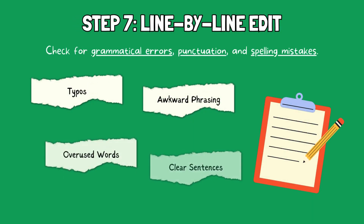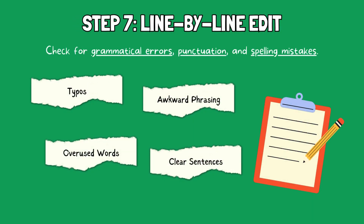Step 7: Line-by-line edit. Polish your prose. This is the stage to check for grammatical errors, punctuation, and spelling mistakes. Look for typos, grammatical errors, and awkward phrasing. Check for overused words and clichés. Make sure your sentences are clear, concise, and engaging.